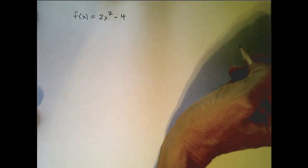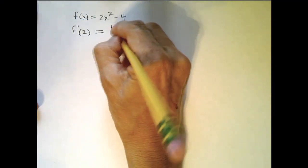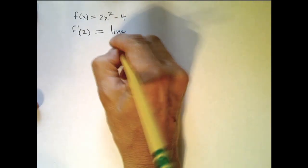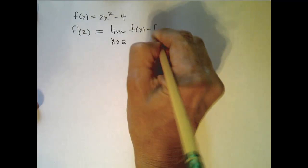So, let's look at an example, which is more of what we've already done. If we have, let's say, f of x equals 2x squared minus 4, and we would like to find f prime of 2, this means we are looking for the limit as x approaches 2, of f of x minus f of 2, all over x minus 2.